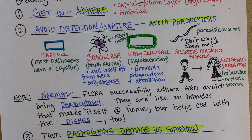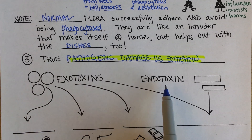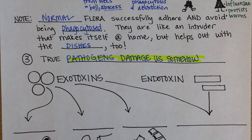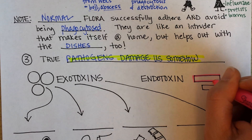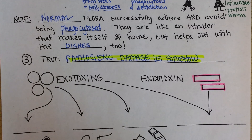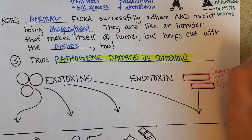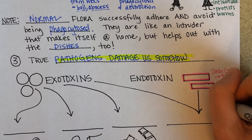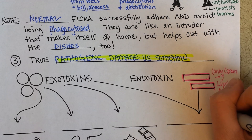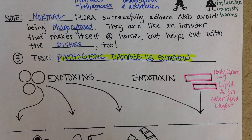The true bad guys do something else — they damage us somehow. They either damage us with exotoxins or with endotoxins, or in some cases both. For endotoxins, only gram-negative cells have an endotoxin because it's part of their lipid layer outside of their peptidoglycan. We'll stop here and pick up with a second video to finish up this page.